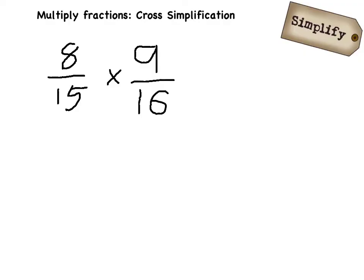According to the rules of fraction multiplication, this multiplication just means that we multiply 8 times 9 for our numerator, and 15 times 16 for our denominator.